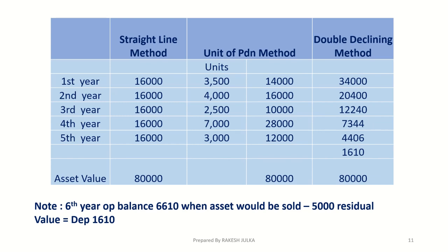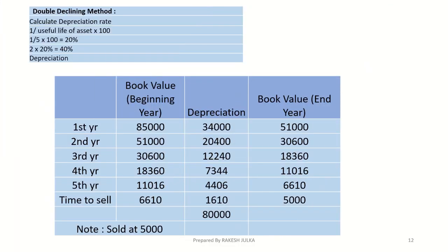In the double declining method, note that we do not deduct the residual value at the beginning — unlike the first two methods. We apply 40% directly on the book value. For example, 40% of $85,000 is $34,000. The book value at the beginning of year one is $85,000; depreciation is $34,000; book value at end of year one is $51,000. That becomes the opening balance for year two, and 40% on $51,000 is calculated next, and so on.